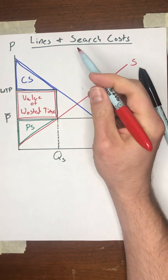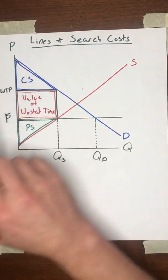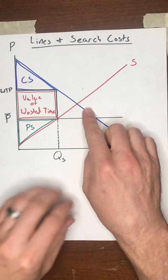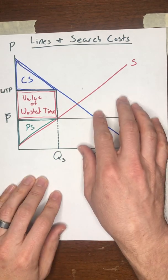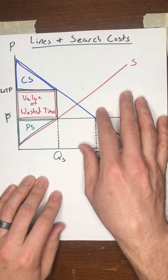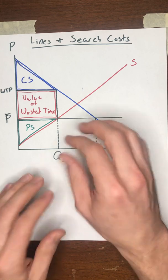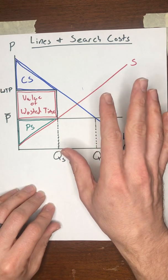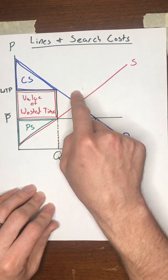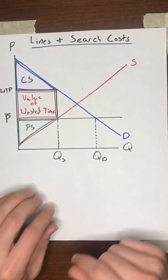Now, you might think, under ordinary circumstances, you might think that a black market is a worse situation than people standing in line. You might think that bribery is a worse thing than long lines. But in terms of economic costs, it turns out lines and search costs are actually worse. They're less efficient.